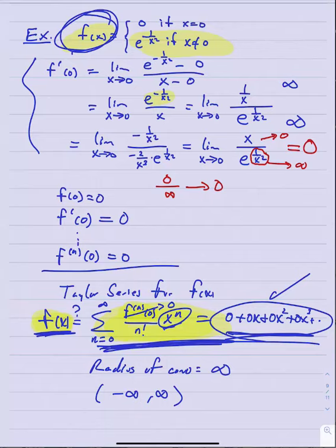This contradicts the naive assumption that a Taylor series always represents its generating function. Not every function is represented by its Taylor series — this is a pathological example. In the next section we'll look at why this happened and develop a theorem to guarantee when it doesn't happen, so we can avoid this issue. For most normal functions, this is actually not a concern.